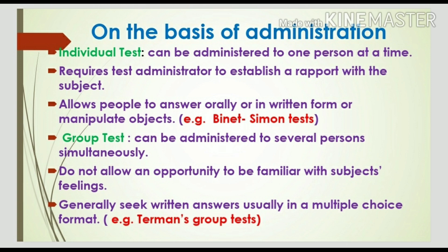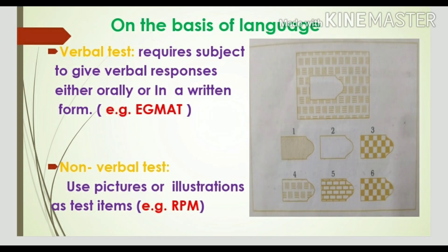Group tests can be administered to several persons simultaneously. However, they do not allow the administrator to be familiar with each subject's feelings, as it is very difficult to establish rapport with everyone in a group. Such tests generally seek written answers, usually in a multiple-choice format. An example is Terman's Group Test.